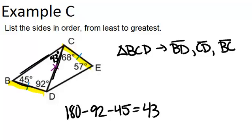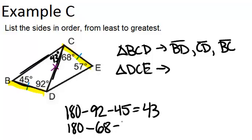Now, let's switch over to the other triangle, triangle DCE. In this triangle, the missing angle is 180 minus 68 minus 57, which is 55 degrees. So, since that's the smallest angle, it means the smallest side is CE, which is across from it.